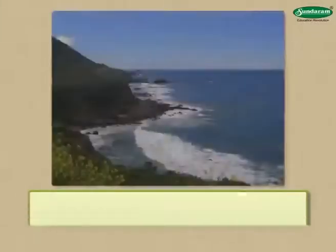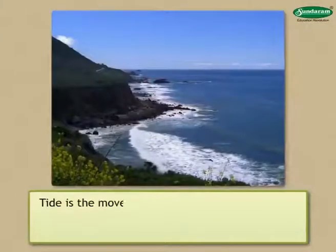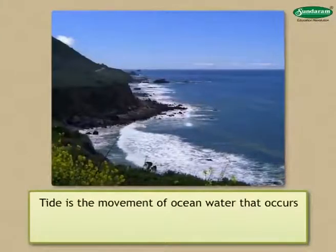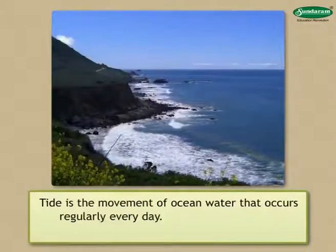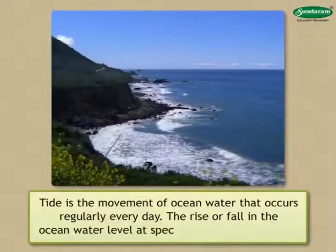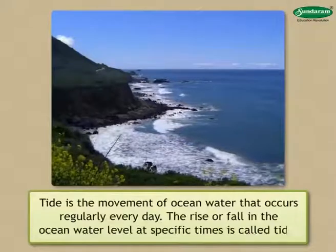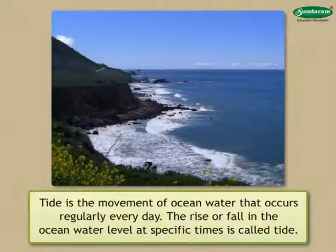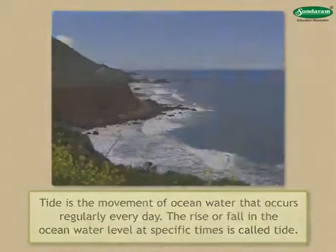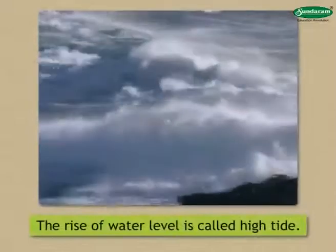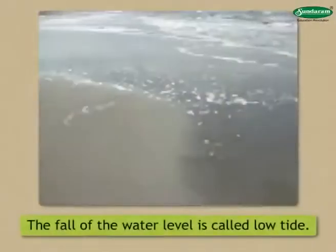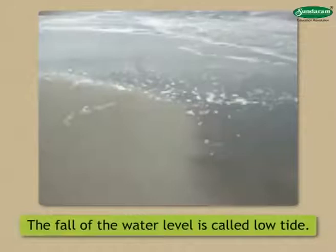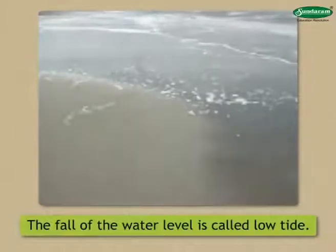Tide is the movement of ocean water that occurs regularly every day. The rise or fall in the ocean water level at specific times is called tide. The rise of water level is called high tide, while the fall of the water level is called low tide.